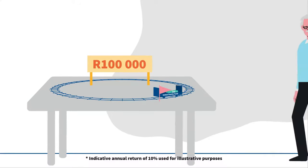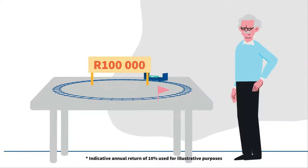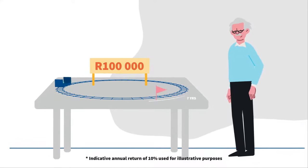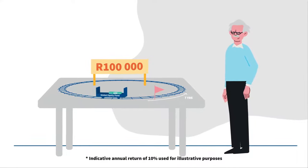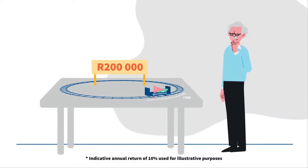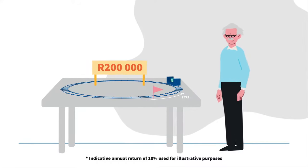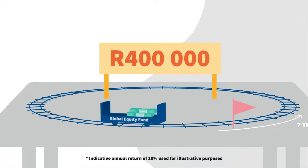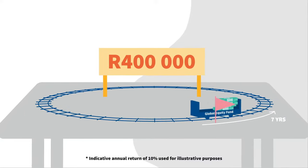Imagine investing R100,000 into a global equity fund and receiving an average return of 10% annually for 7 years. By the end of that period, your wealth will have approximately doubled in size to R200,000. If you left that for another 7 years and received the same rate of return, you'd now have R400,000. And if you had the discipline to leave that money for just 7 more years to make a total of 21, it would have grown 8 times beyond its original value to R800,000.